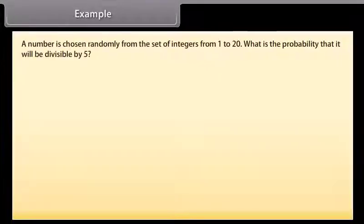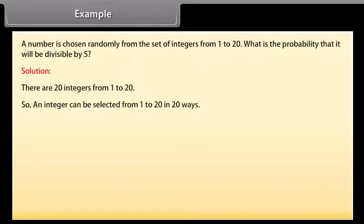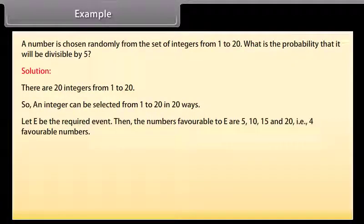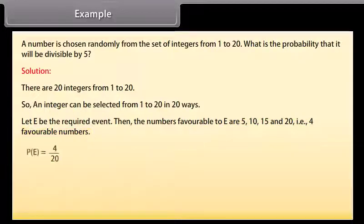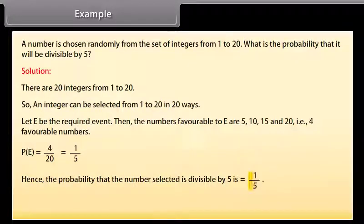Example: A number is chosen randomly from the set of integers from one to twenty. What is the probability that it will be divisible by five? Solution: There are twenty integers from one to twenty, so an integer can be selected in twenty ways. Let E be the required event. Then the numbers favorable to E are 5, 10, 15, and 20 — that is, four favorable numbers. P(E) = 4/20 = 1/5. Hence the probability that the number selected is divisible by five is 1/5.